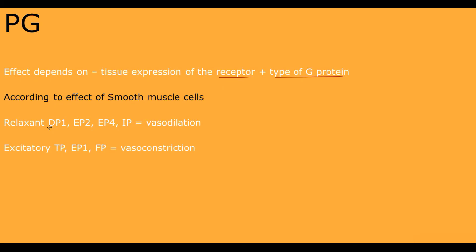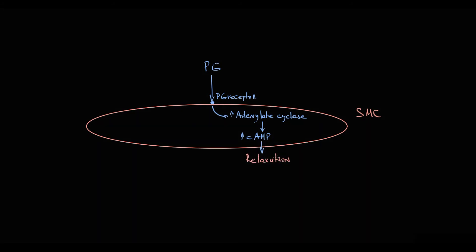Both DP1 receptor and EP2 and EP4 receptors are relaxant receptors that induce vasodilation of smooth muscle cells of dermal blood vessels. The mechanism of relaxation is that once these prostaglandins act on their receptors on smooth muscle cells, it induces activation of adenylate cyclase that converts ATP into cyclic AMP. Increase in cyclic AMP induces relaxation of smooth muscle cells.